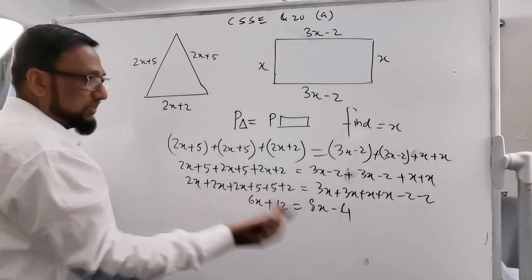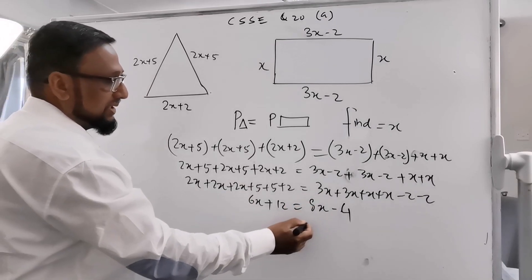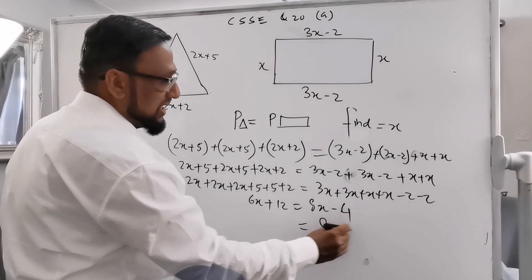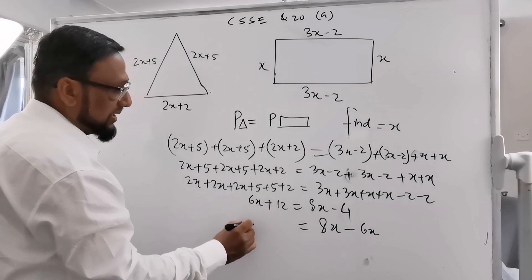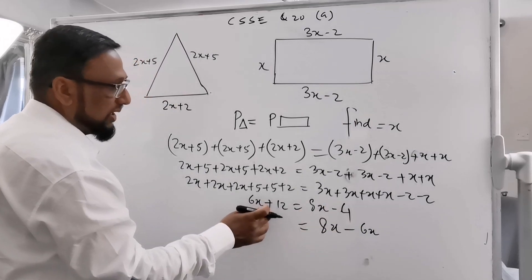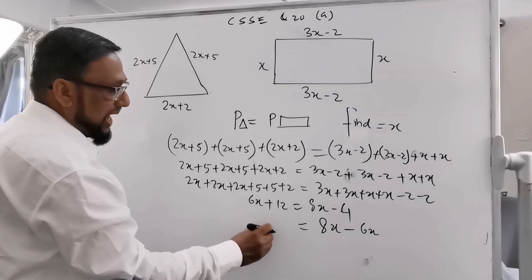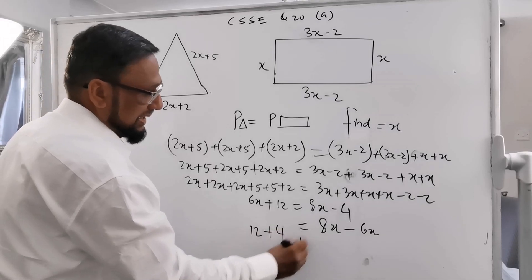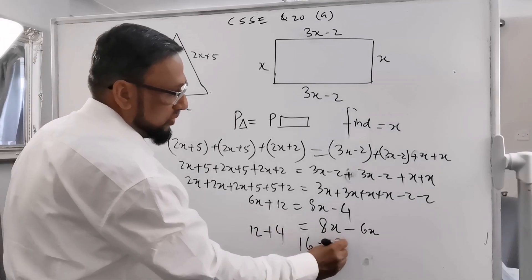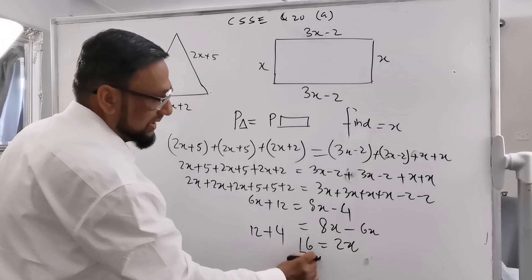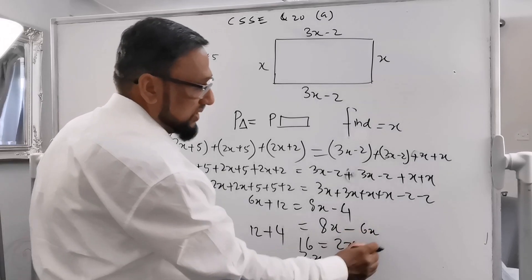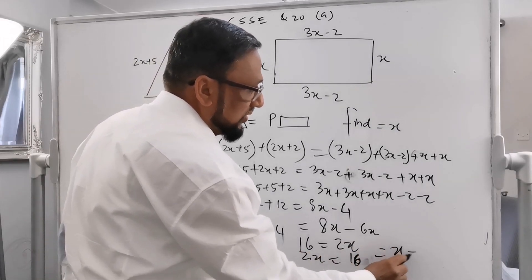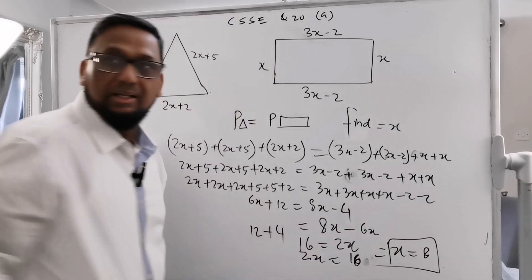Now we move the x terms to one side. Moving 6x to the right gives 8x minus 6x, which is 2x. Moving minus 4 to the left gives 12 plus 4, which is 16. So 2x equals 16, and dividing both sides by 2 gives x equals 8.